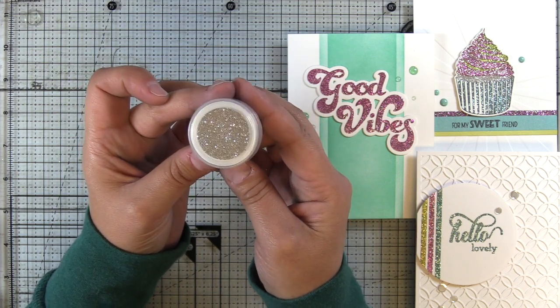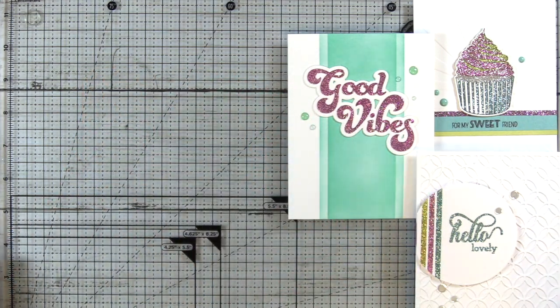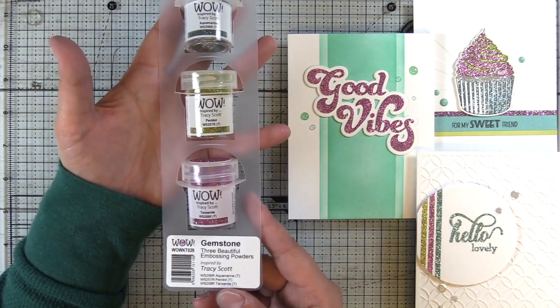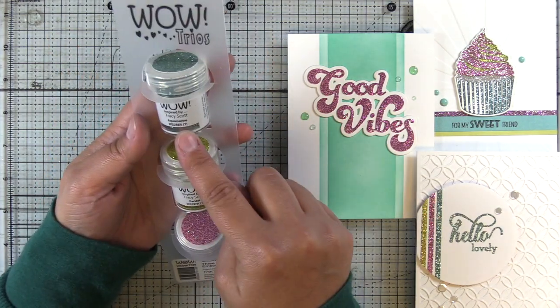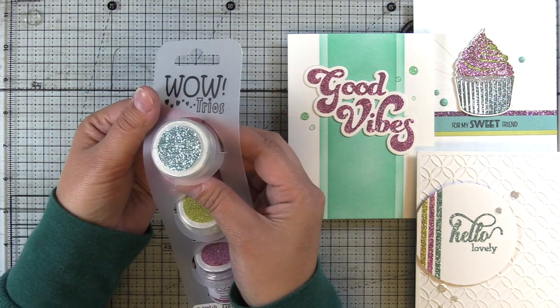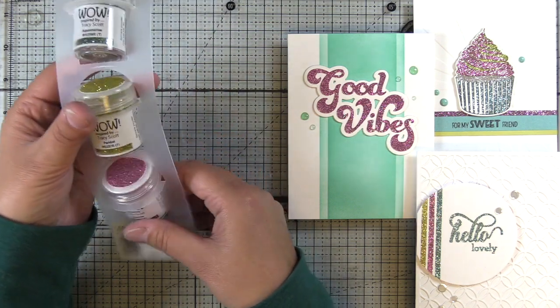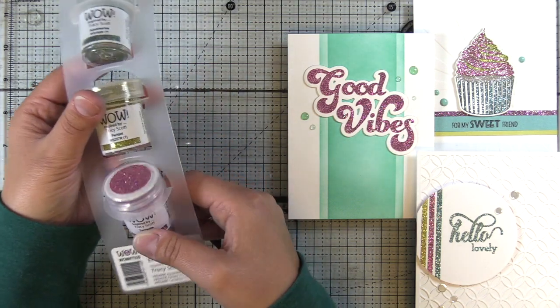We're going to use metallic platinum sparkle, which is a gorgeous color. We're going to use a new trio called Gemstone. It has three glitter embossing powders including aquamarine, peridot, which is a yellow green, and also tanzanite, which is a purplish pink.